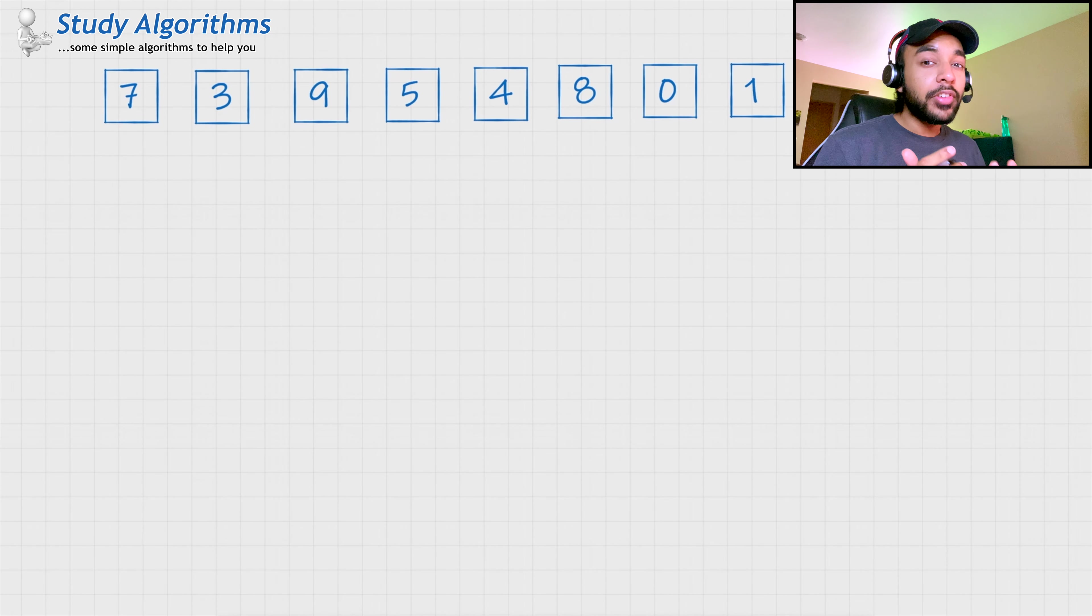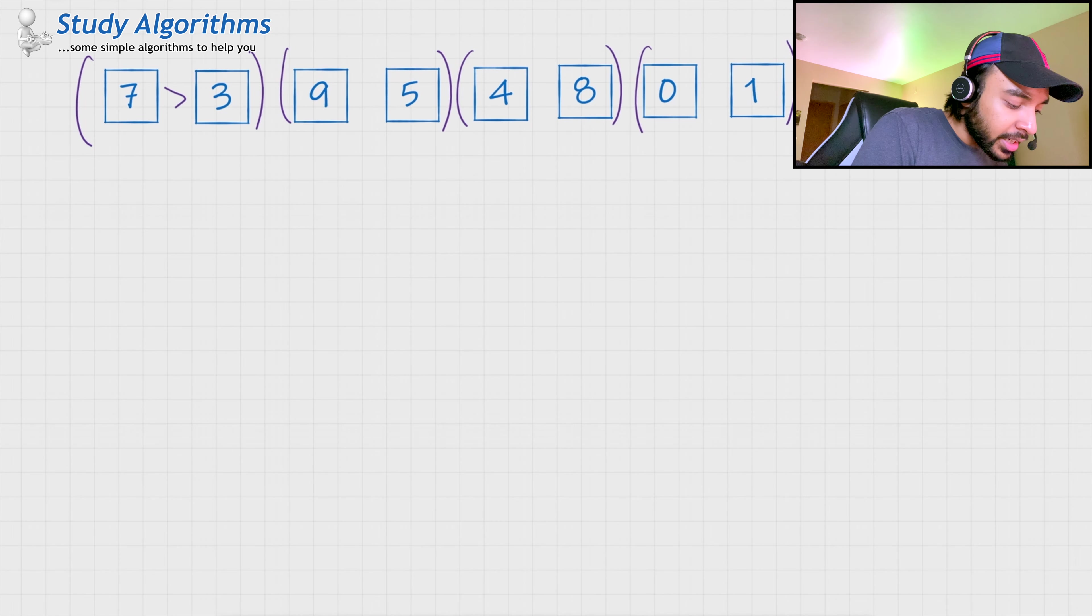You know that it is very easy to compare two numbers, right? You can easily determine which one is smaller and which one is larger. Correct? So, to conquer this problem, we are dividing our problem into small parts. So, I divide my problem like this. And then, I can easily determine that 7 is greater than 3, 9 is greater than 5, 8 is greater than 4, and 1 is greater than 0. So, in my next step, when I want to combine these elements, I can sort these elements and place them accordingly.